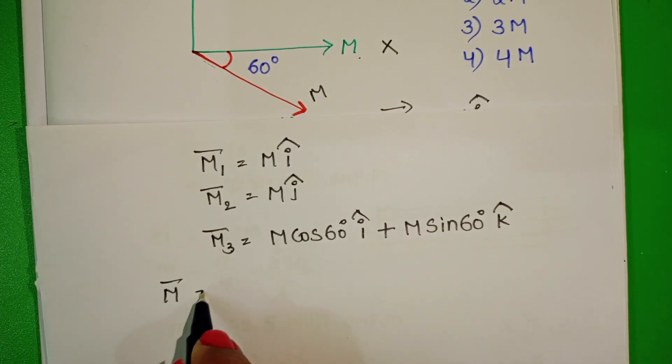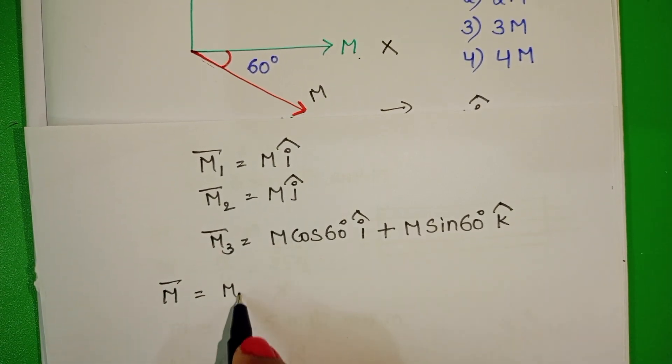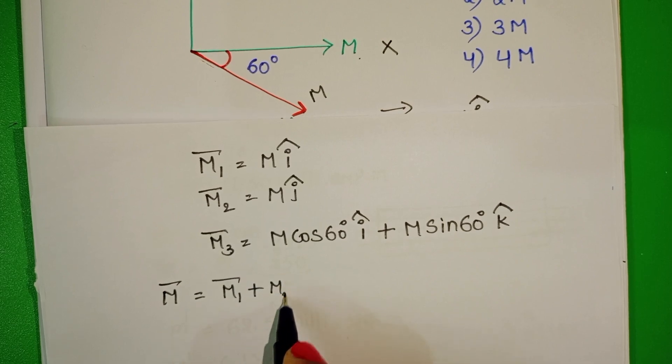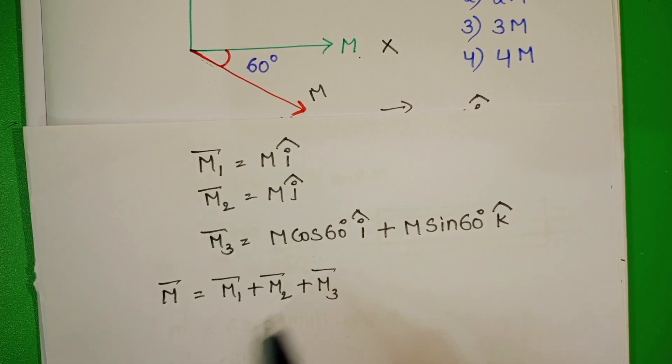So M3 bar equals M cos 60 i cap plus M sine 60 k cap. Resultant magnetic moment M bar equals M1 bar plus M2 bar plus M3 bar.